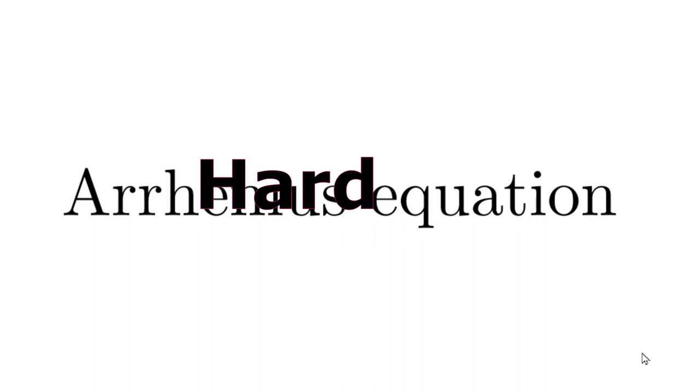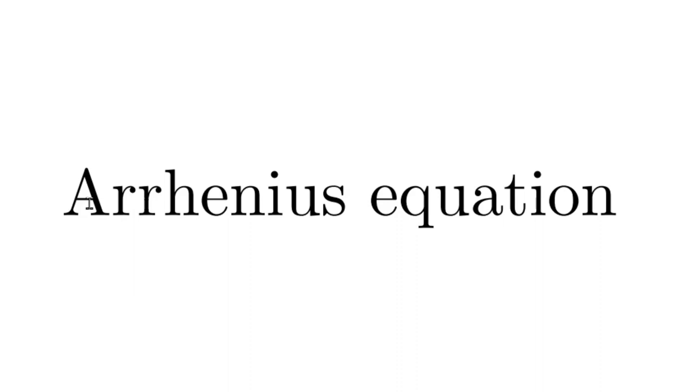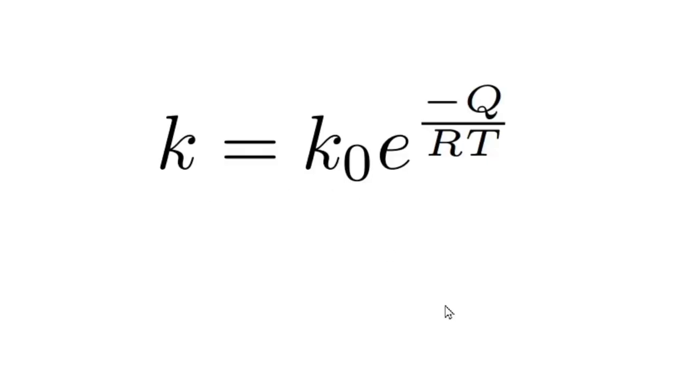All right, hard mode. We are going to solve the Arrhenius equation. I am probably mispronouncing that. Here is the equation right here, and we are going to solve for T. Now let's get the easy part out of the way first. K-naught is a constant. Let's divide both sides by K-naught.